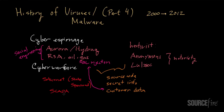Stuxnet was also interesting in that it was capable of causing a physical malfunction of these devices by making them operate in ways they weren't designed to handle. This threat really toed the line between virtual damage and actual tangible physical damage — it made these devices spin in ways they weren't meant to spin and actually caused them to break down. I think many years from now people will say that Stuxnet marked a pivotal moment in the history of malware.